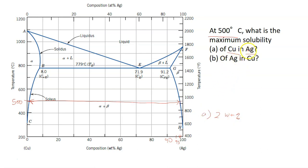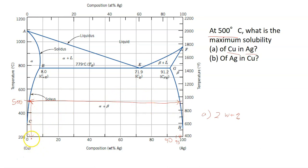For part B — the maximum solubility of silver in copper — we read the alpha solvus boundary on the copper-rich side at 500 degrees Celsius. Reading downward, the value is approximately 1.5 weight percent of silver in copper.